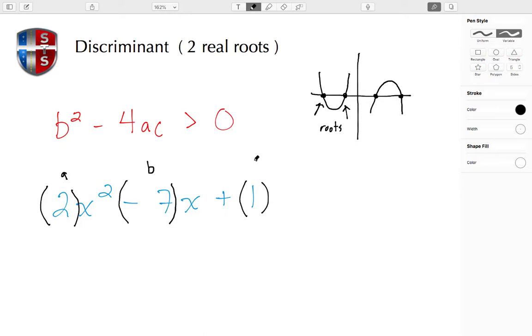We have b², which is going to be (-7)², minus 4 times the quantity a, which is 2, times the quantity c, which is 1. So (-7)² is 49.